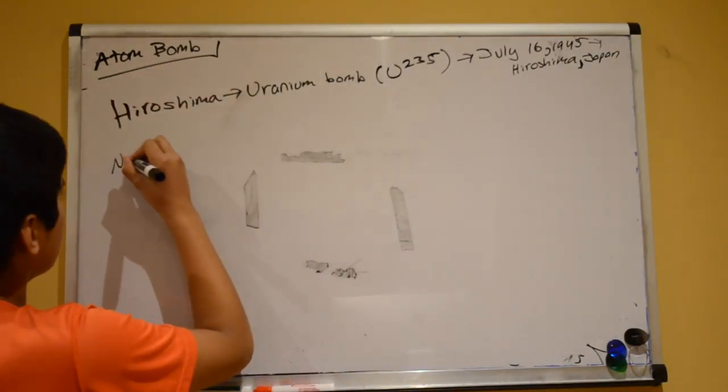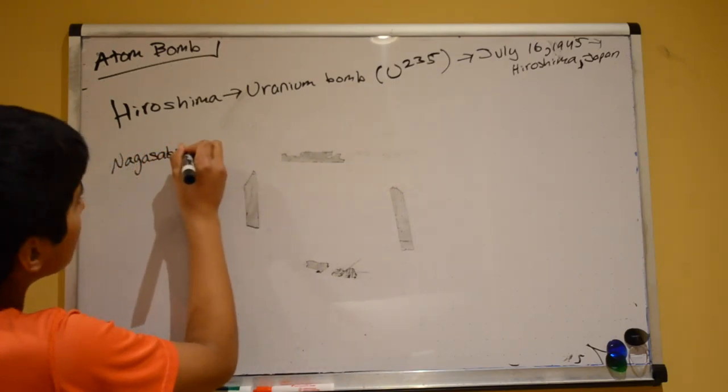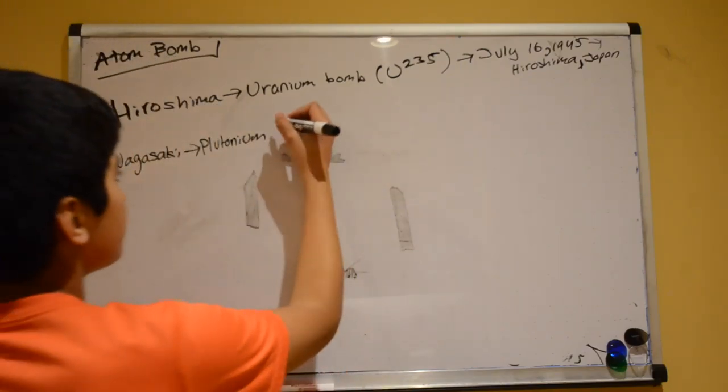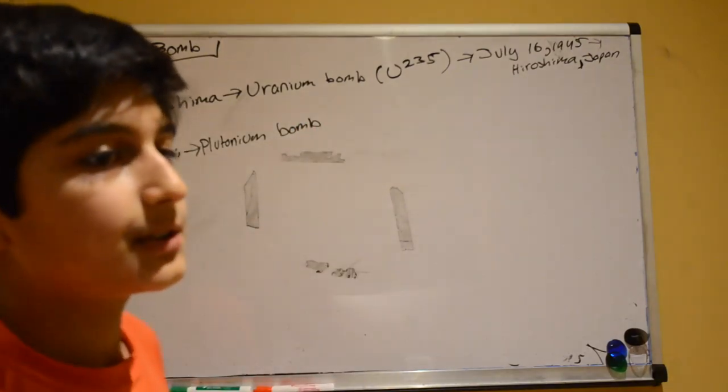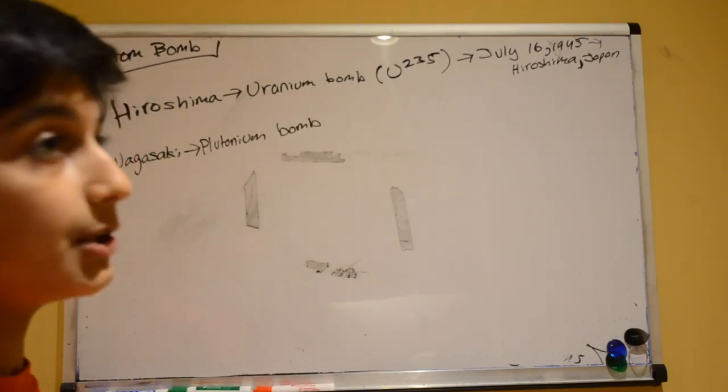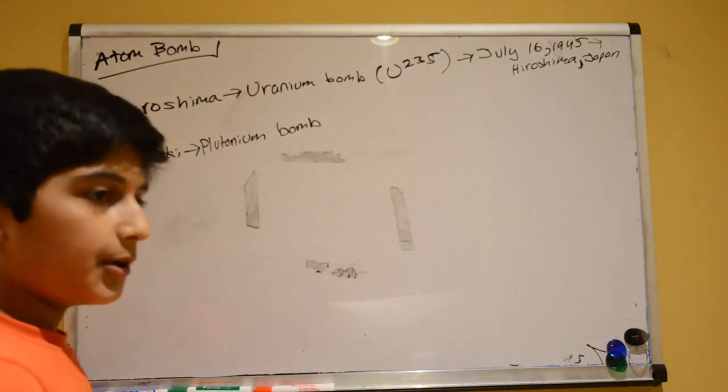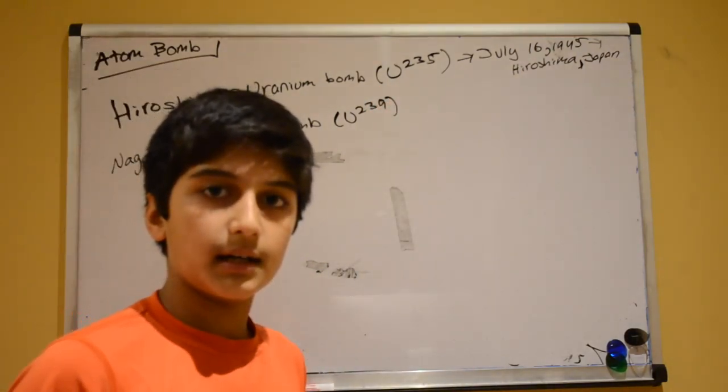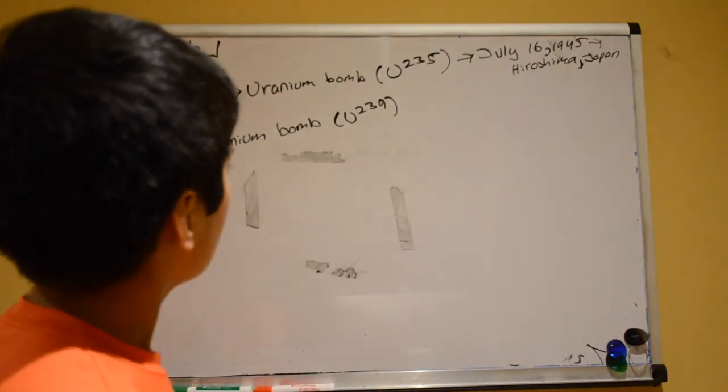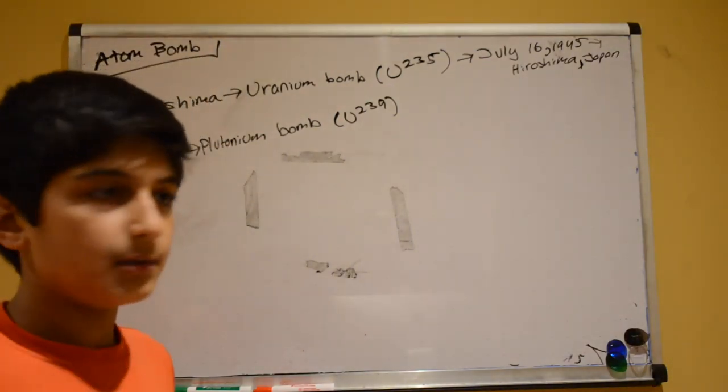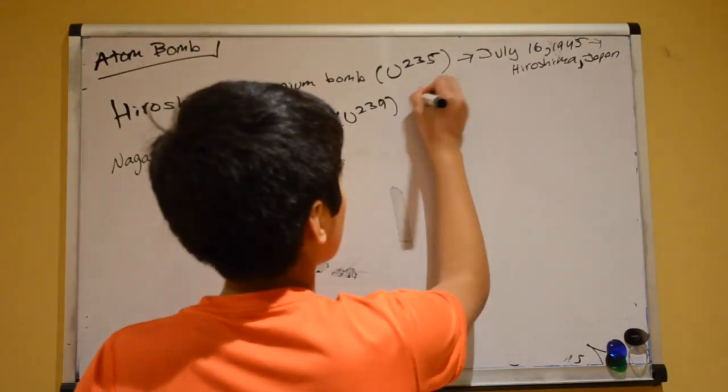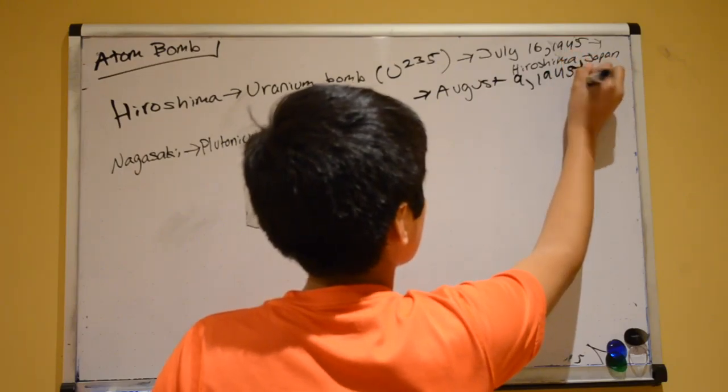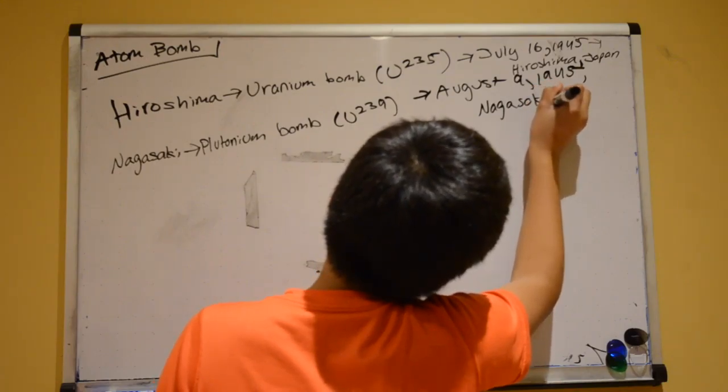Now the bomb dropped on Nagasaki was a plutonium bomb. And basically what a plutonium bomb is, plutonium is like uranium but it's manmade. Some traces of plutonium have been found in uranium ores but not many. Plutonium is basically U-239. Plutonium is easier to obtain than U-235. Basically it's normal uranium, U-238 with one extra neutron. And then this was dropped on August 9, 1945 on Nagasaki, Japan.